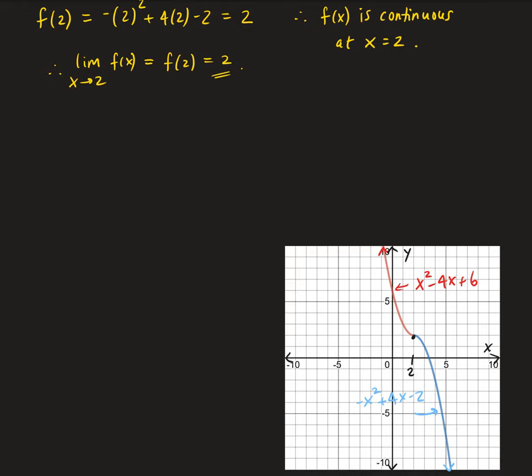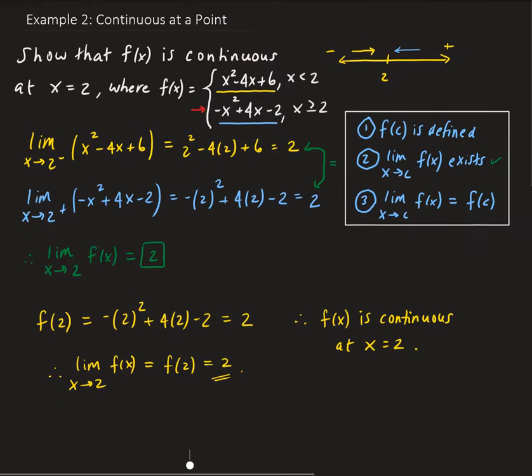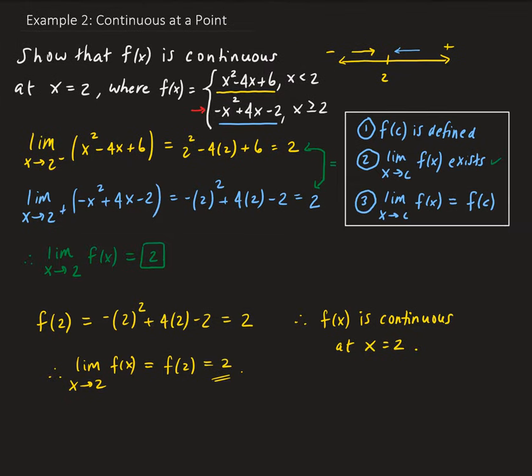Because x squared minus 4x plus 6 is a polynomial, and we know polynomials are continuous everywhere. The same is true for the other part — minus x squared plus 4x minus 2 is also a polynomial, and polynomials are continuous everywhere. So because it's continuous at 2 and continuous on each of the respective domains, this function turns out to be continuous everywhere.